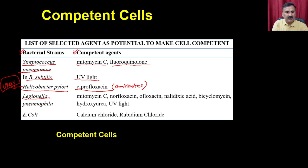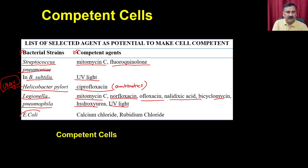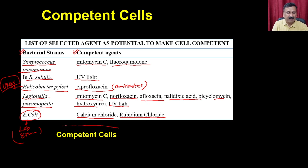Legionella pneumophila is made competent by treating with mitomycin C, norfloxacin, ofloxacin, hydroxyurea, or UV light. For E. coli, the laboratory strain can be made competent using covalent chemicals like calcium chloride and rubidium chloride. The cells are treated with these different agents to make them competent.